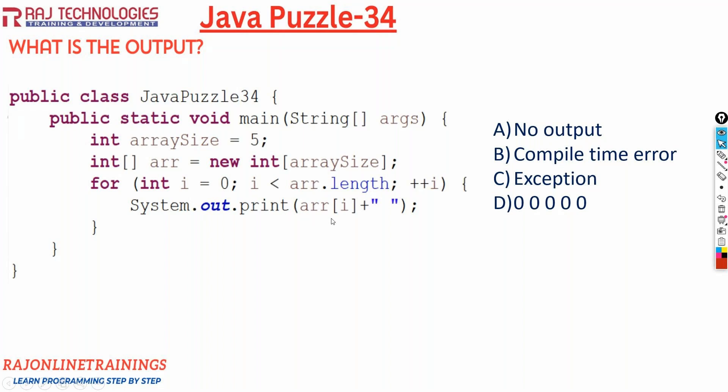So it is a basic simple question. Here we are allocating memory for an integer array of size 5. We have given the array size as 5, so it is going to allocate memory for 5 elements. So this is connected to our array ARR, and the indexes are 0, 1, 2, 3, 4.